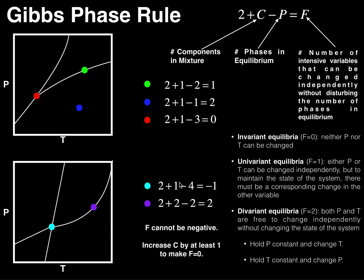That means there must actually be two components in the mixture. When we assume C equals two, we get 2 plus 2 minus 4 equals zero. So this light blue point has invariant equilibrium, similar to the triple point in the previous example. You should play around with this: for any way you move this point along any of the lines, it will disturb the number of phases in equilibrium.